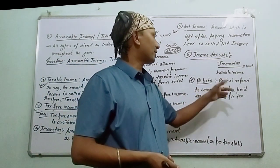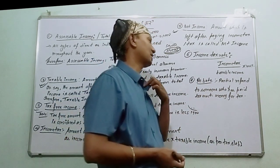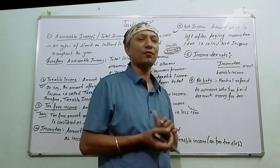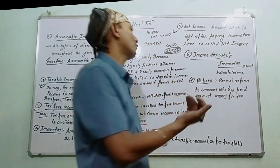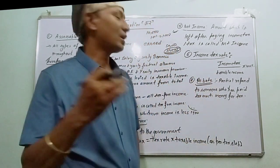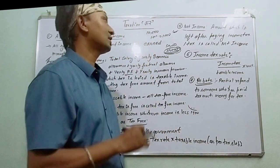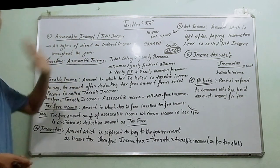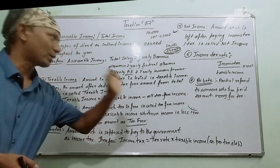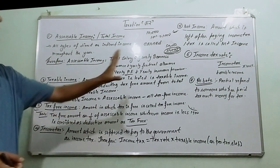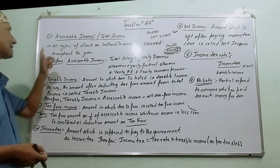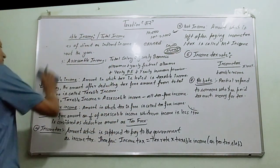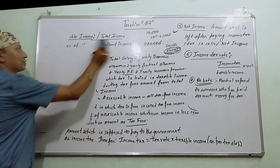Number 6 is Rebate — a partial refund to someone who has paid too much money for tax. So if you have overpaid tax, you are refunded that amount. The key terms to learn for the exam are: taxable income, income tax rate, net income, and accessible income. This covers the taxes chapter in terms of definitions and conceptual knowledge.